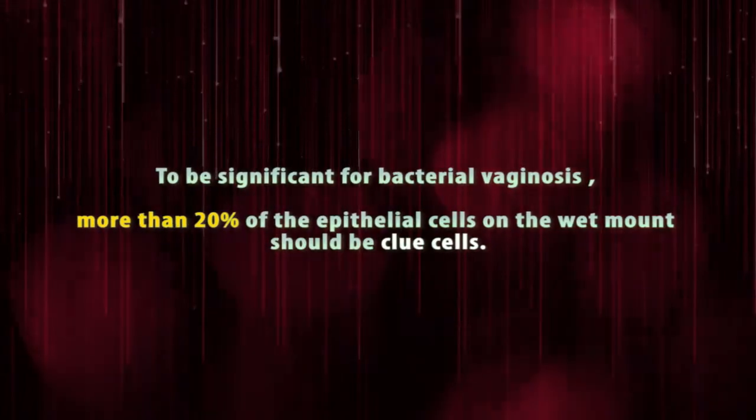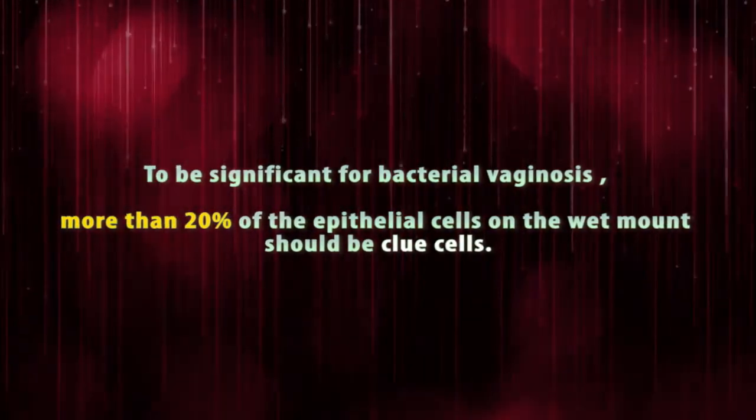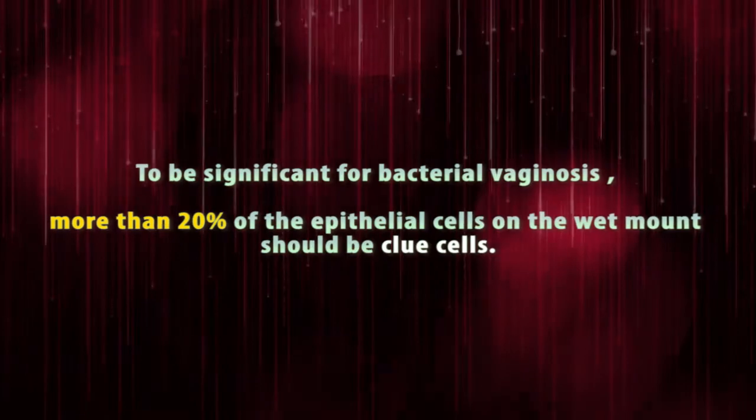To be significant for bacterial vaginosis, more than 20% of the epithelial cells on the wet mount should be clue cells.